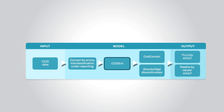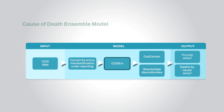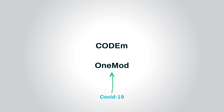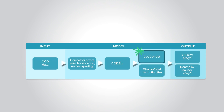Once data is prepared, we use CODEM, or the Cause of Death Ensemble model, to estimate death rates from all available data for each cause. Once CODEM models from individual causes are vetted, we need to make sure all deaths from every cause for every location, year, age, and sex add up to all-cause mortality rates we estimate from demographic data. COVID-19 was estimated separately using a new model called OneMod. We then use another model called COD-Correct to reconcile cause-specific deaths that add up to the total number of deaths. After COD-Correct, we add in deaths from unexpected events such as natural disasters or human conflict.